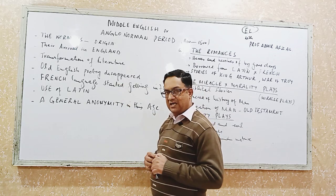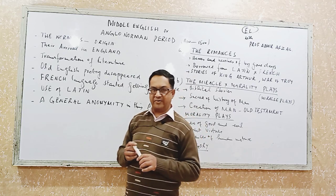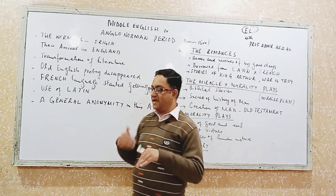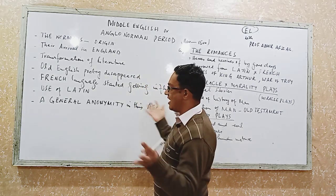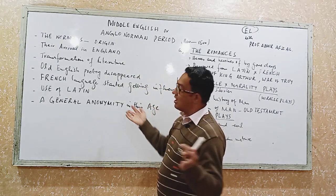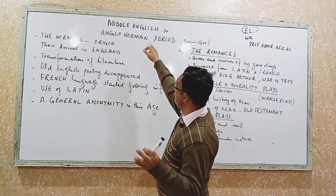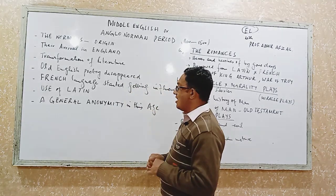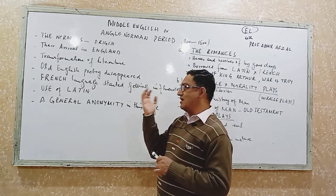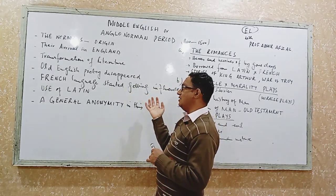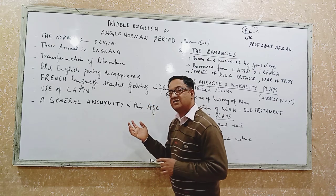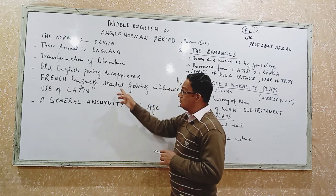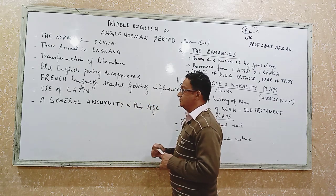Old English started disappearing and it was replaced by another language which was called Middle English. This was a big aspect and a significant development — Middle English emerged as a new form of the English language.